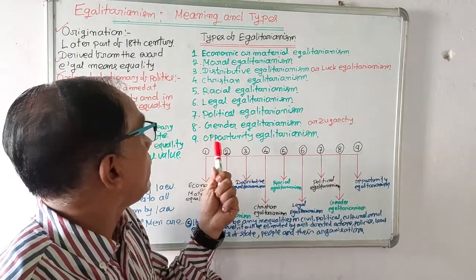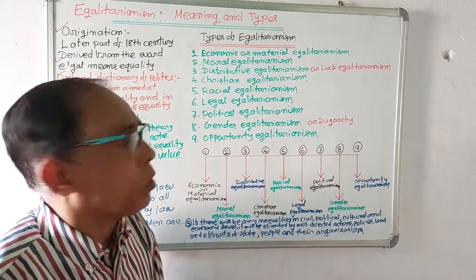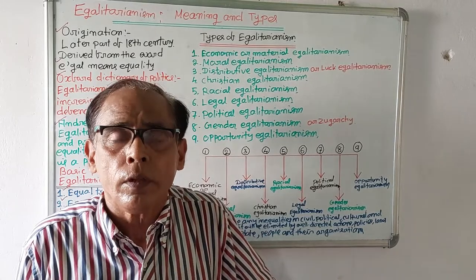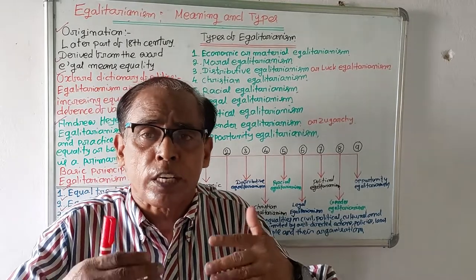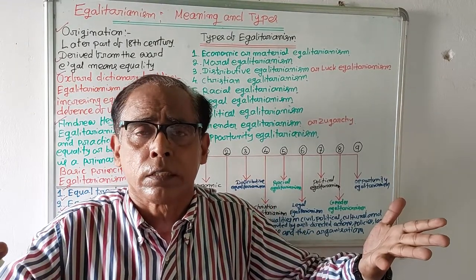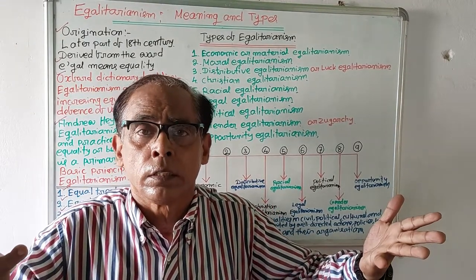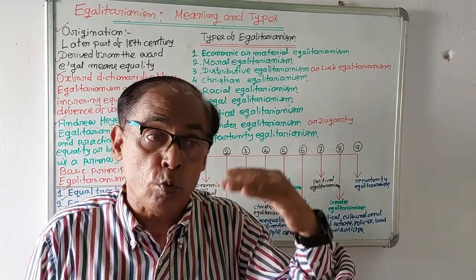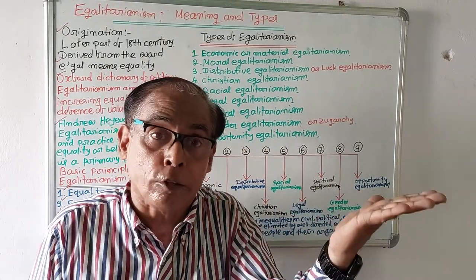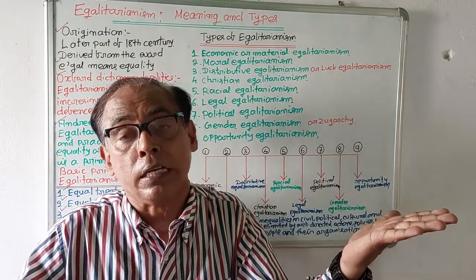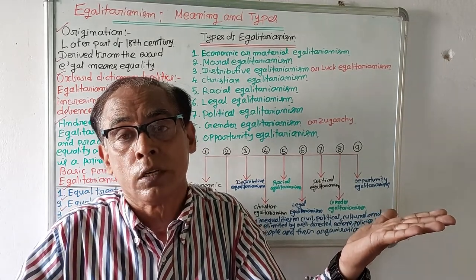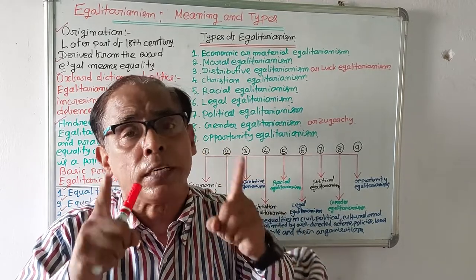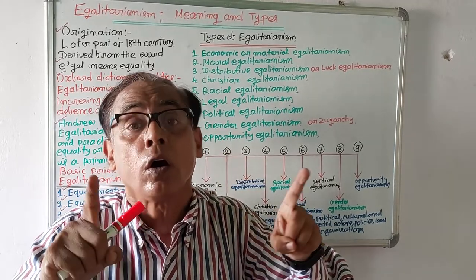Finally, number nine: opportunity egalitarianism. Opportunity egalitarianism means whenever people will be given different types of opportunity, they should be given equally. Nobody will be given more opportunity and nobody will be given less. Whenever people will be given opportunities, there must not be any discrimination or disparity.